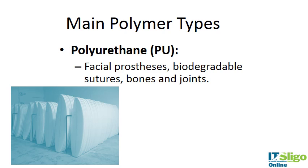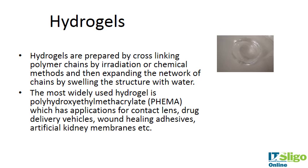Polyurethanes can be foams and are used in facial prostheses, bones and joints, and can be used in biodegradable sutures. Another application of polyurethanes in other industries would be surfboards — a foam with a good fatigue life.